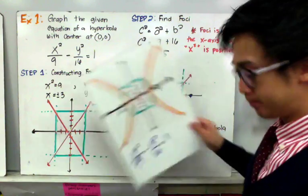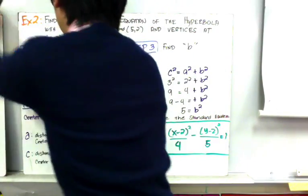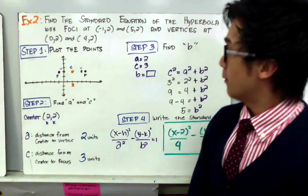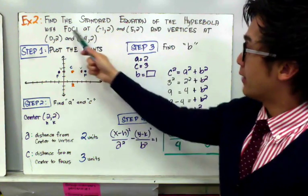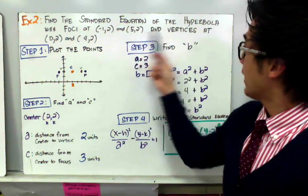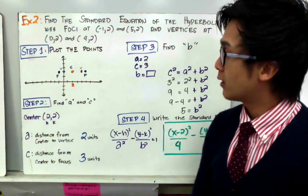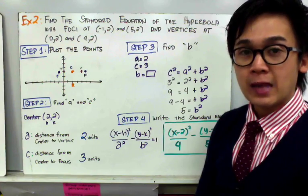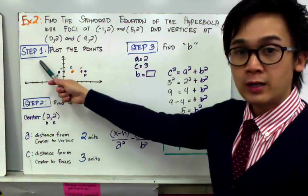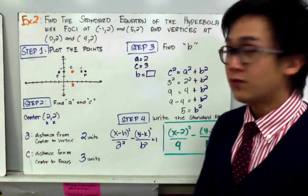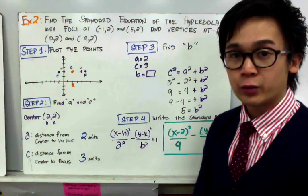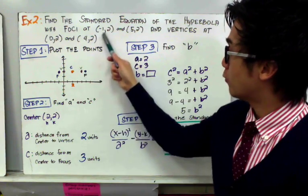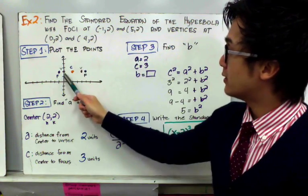For the second example, we're given the parts of the hyperbola and required to find the standard equation, given foci at (−1, 2) and (5, 2), and vertices at (0, 2) and (4, 2). Just like other conic sections, whenever we are given the parts, the first step is to always plot the points. Let's plot the foci and vertices so we can find the center, which is the most important part of the hyperbola.